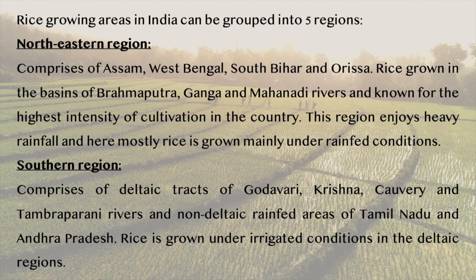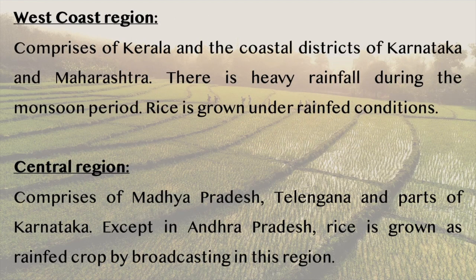The southern region comprises the deltaic tracts of Godavari, Krishna and Cauvery, and non-deltaic rain-fed areas of Tamil Nadu and Andhra Pradesh. Rice is grown under irrigated conditions in the deltaic regions. The west coast region comprises Kerala and the coastal districts of Karnataka and Maharashtra, where heavy rainfall occurs during the monsoons and rice is grown under rain-fed conditions. The central region comprises Madhya Pradesh, Telangana and parts of Karnataka. In Andhra Pradesh, rice is grown as a rain-fed crop by broadcasting in this region.